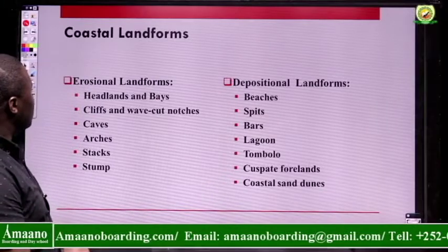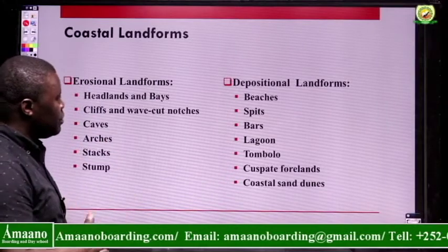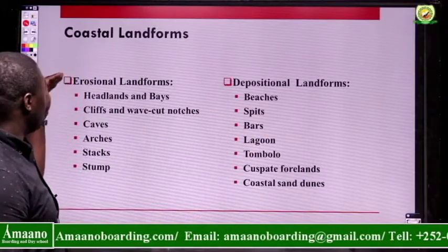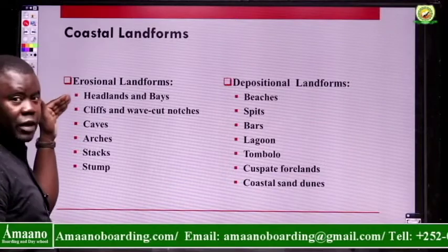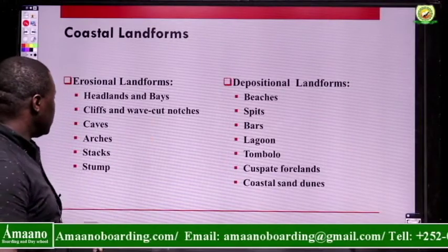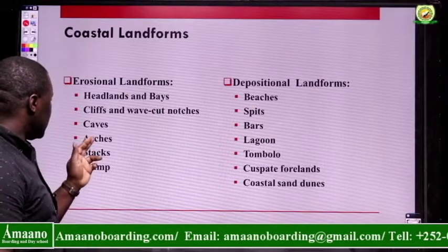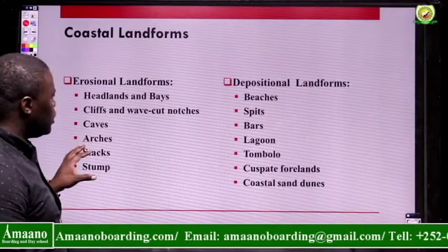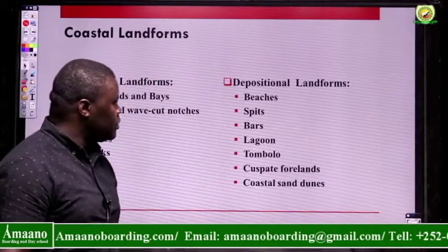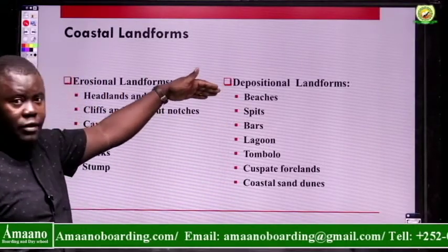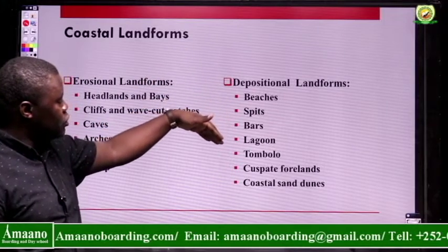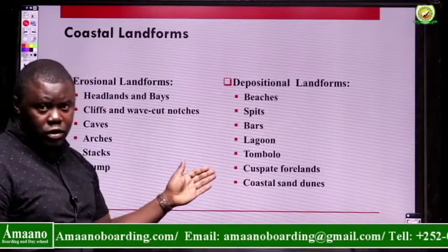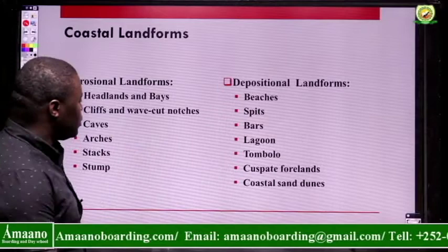Coastal landforms are divided into two types. Erosional landforms include headlands and bays, cliffs and wave-cut notches, caves, arches, stacks, and stumps. Depositional landforms include beaches, spits, bars, lagoons, tombolos, cuspate forelands, and coastal sand dunes. This is just a look at what we have covered.